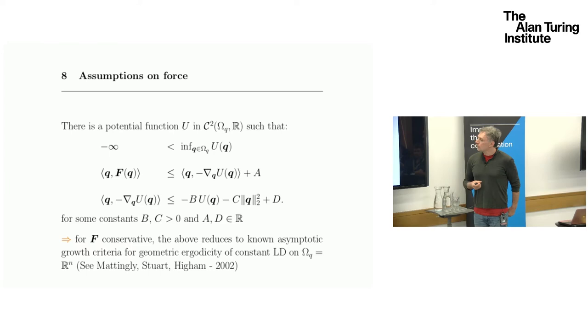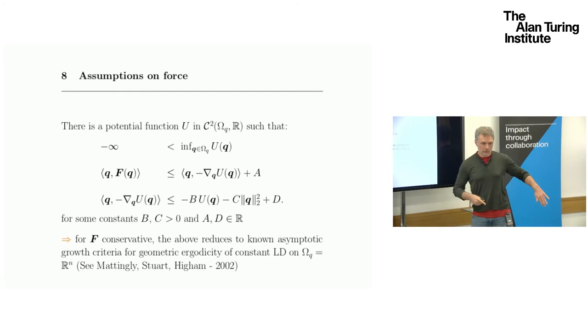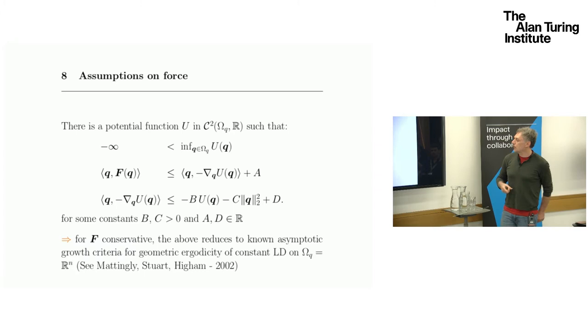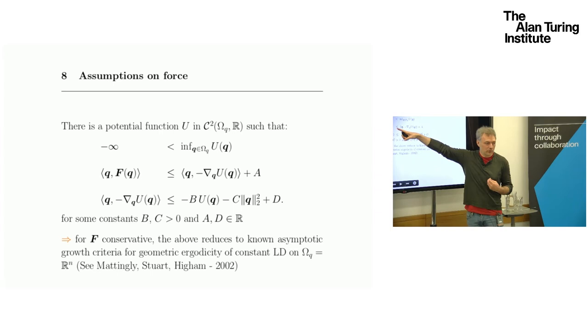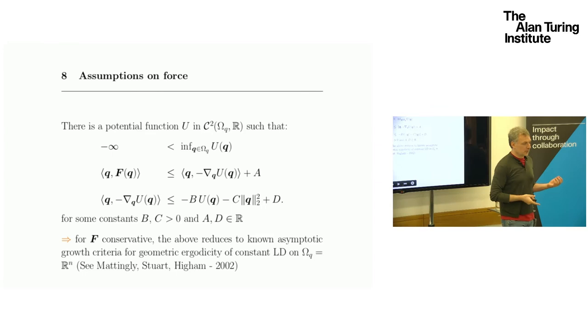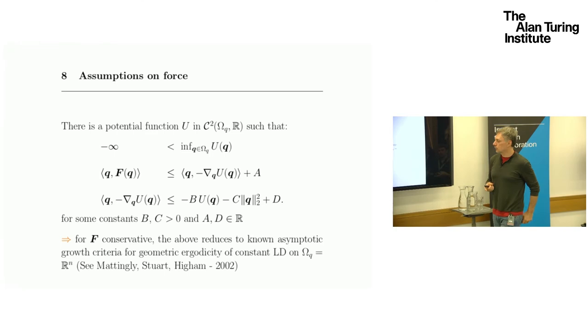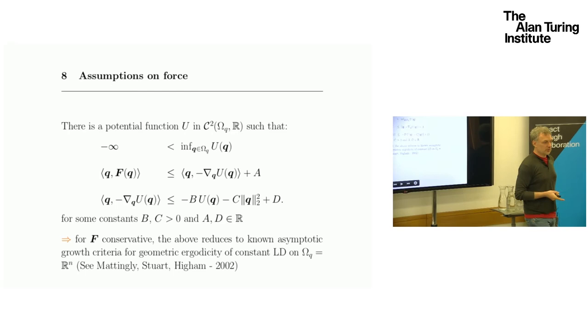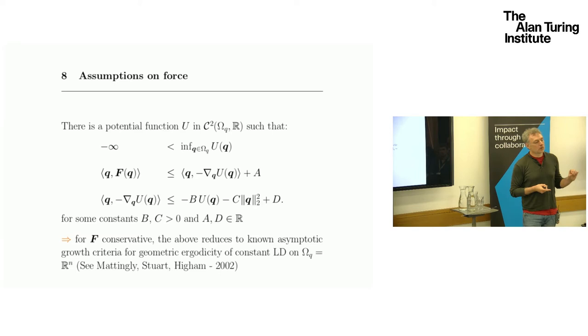Now let's look at the assumptions on force. These are much more technical. The first one is just that your potential has to be bounded away from minus infinity on your full position domain. Then this is that your force may not be actually coming from a potential, but it's actually dominated in that sense by an existing potential, a Lyapunov function. By the gradient of such. And then that gradient itself is dominated by a control like this. This is related to what you need to prove the inequality on the generator of your Langevin dynamics to apply the Harris condition.